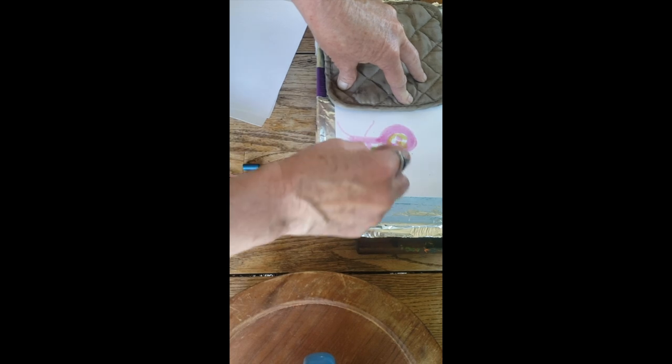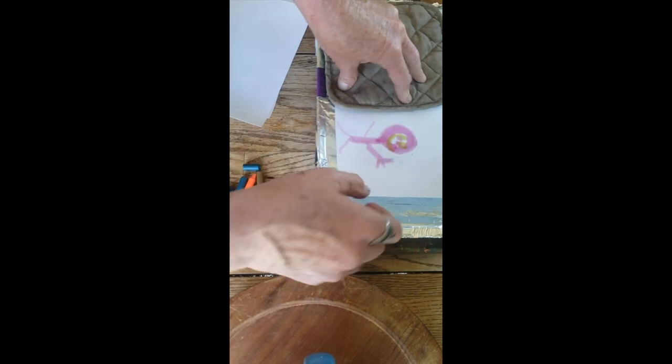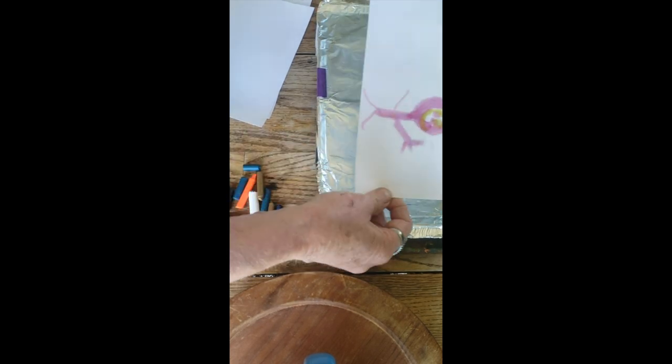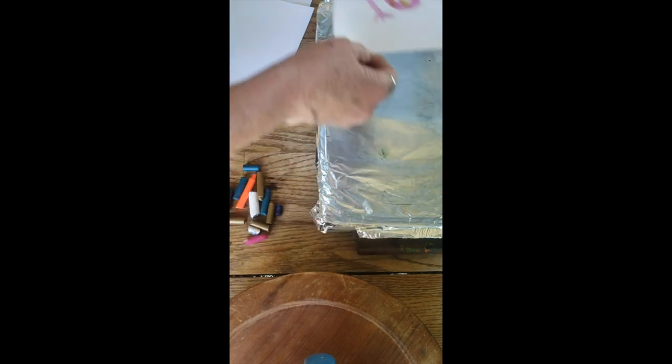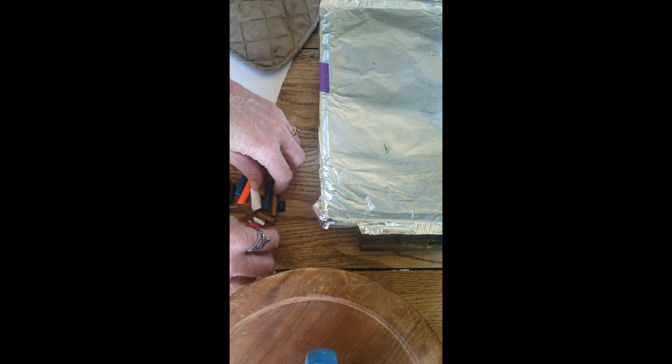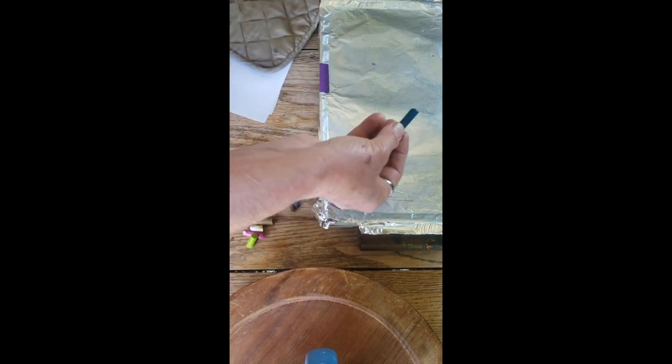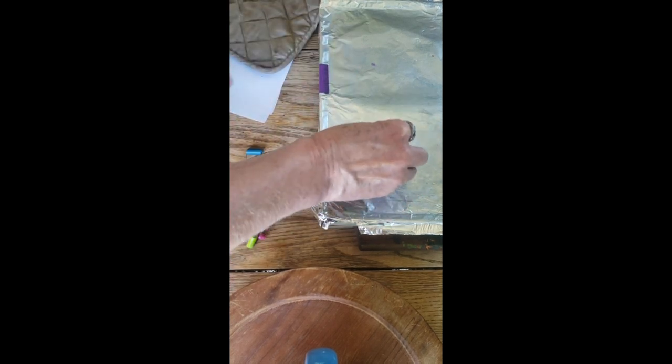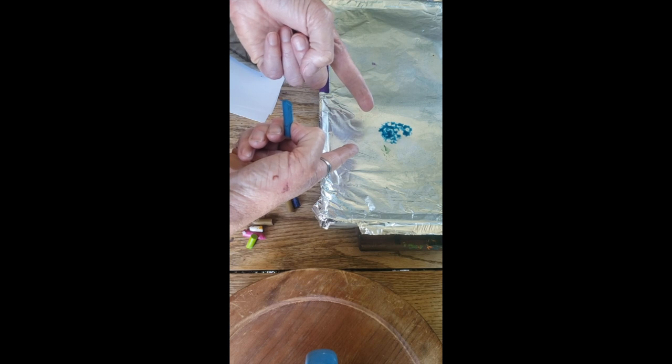That's pretty easy, so I've got a little picture. Another way to do this is to place the crayons right onto the foil. You want to have it covered with foil.